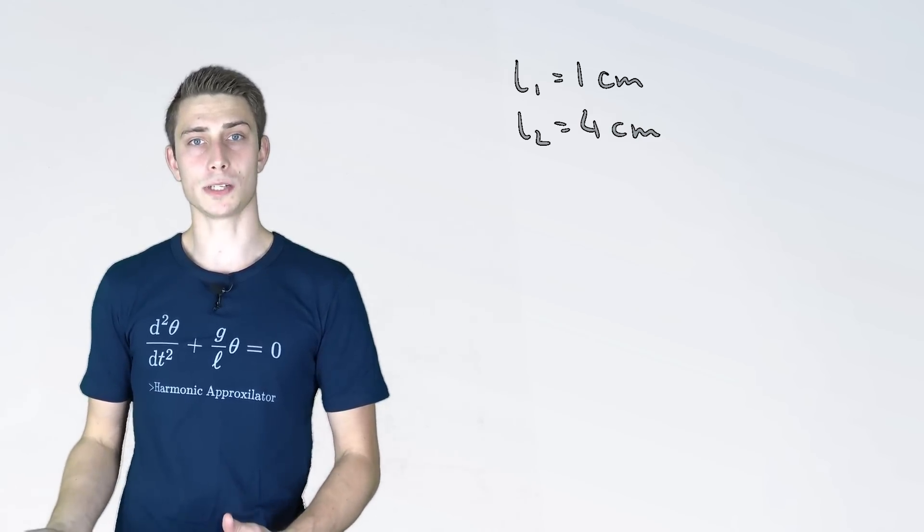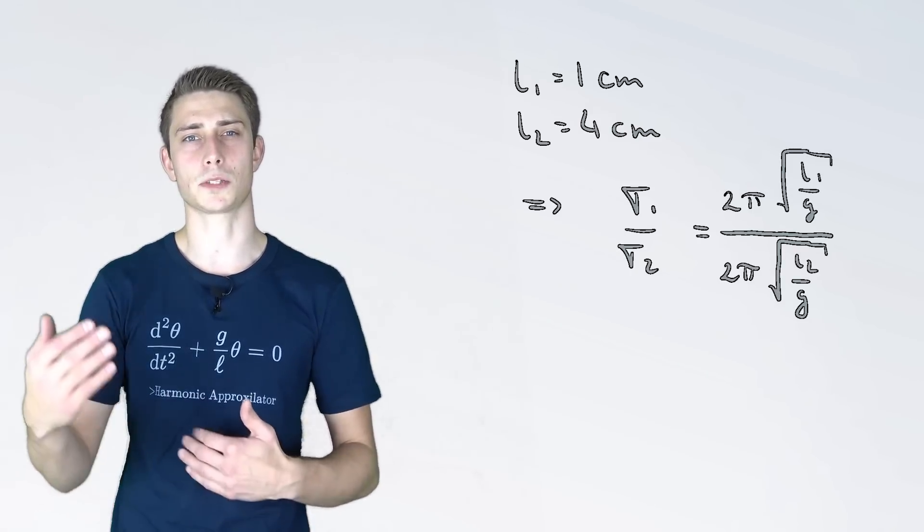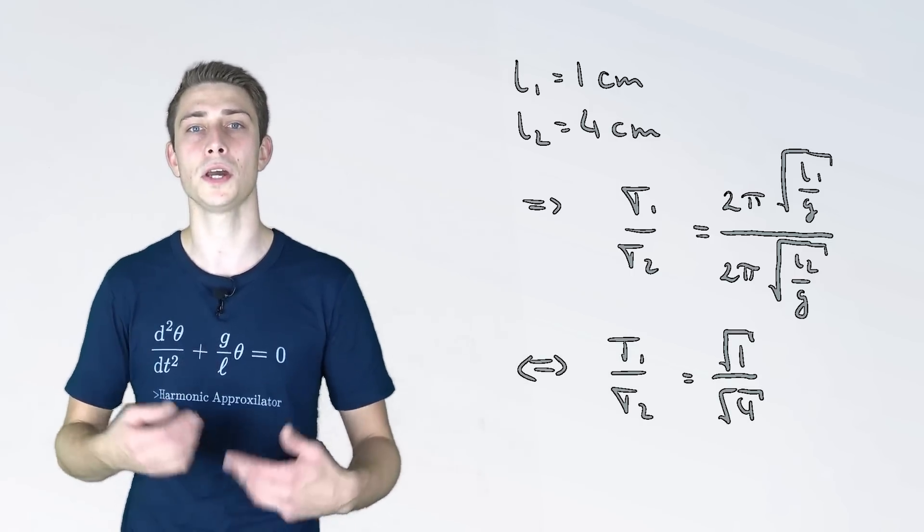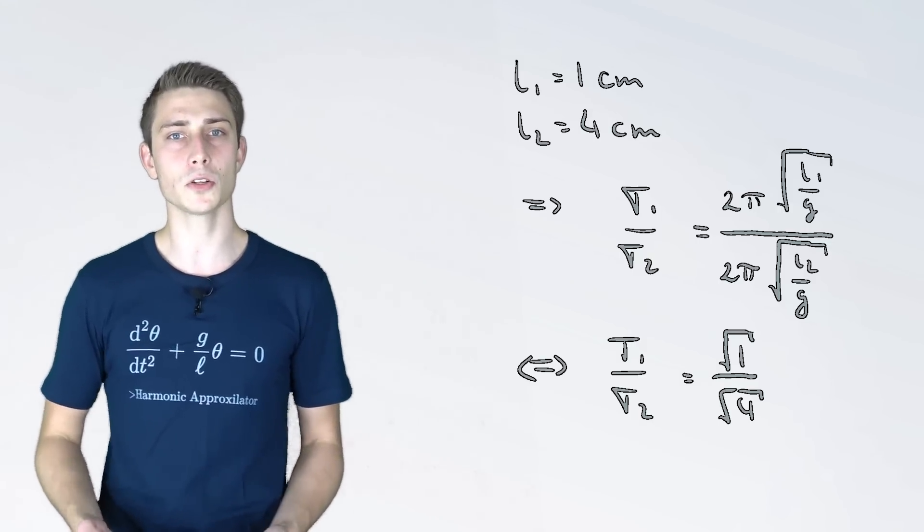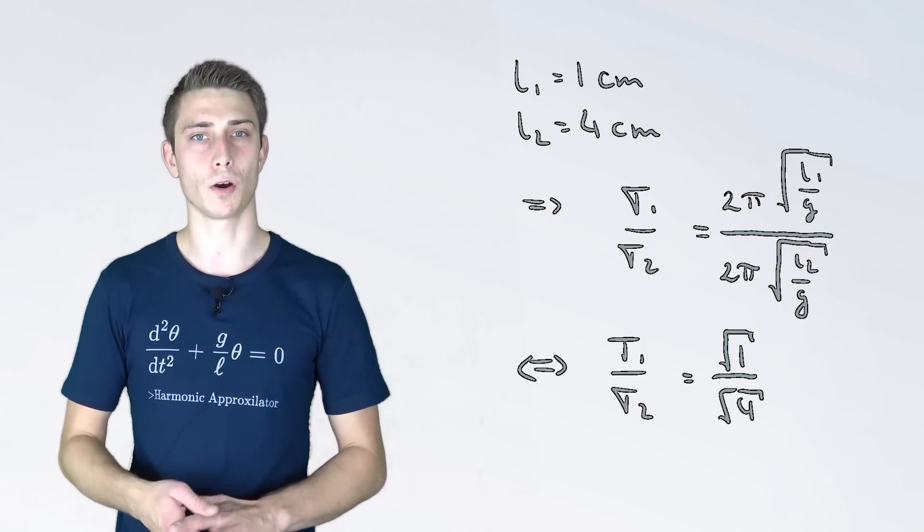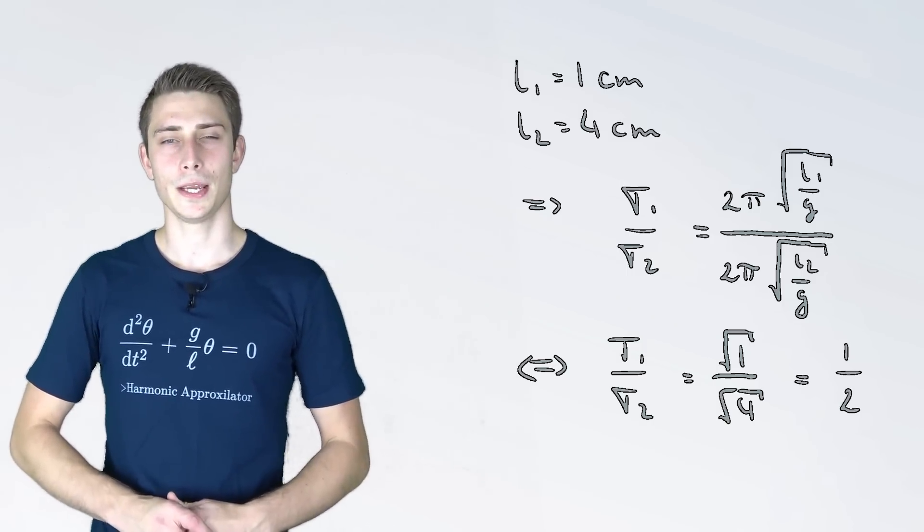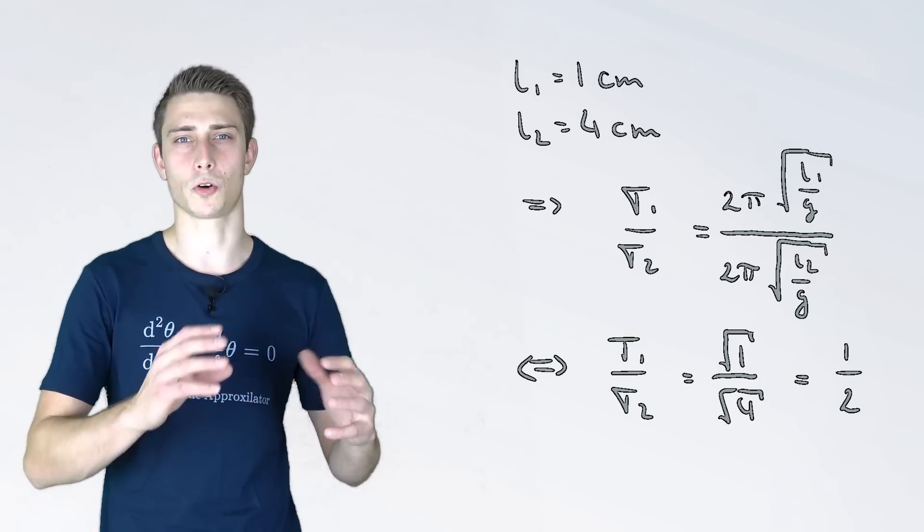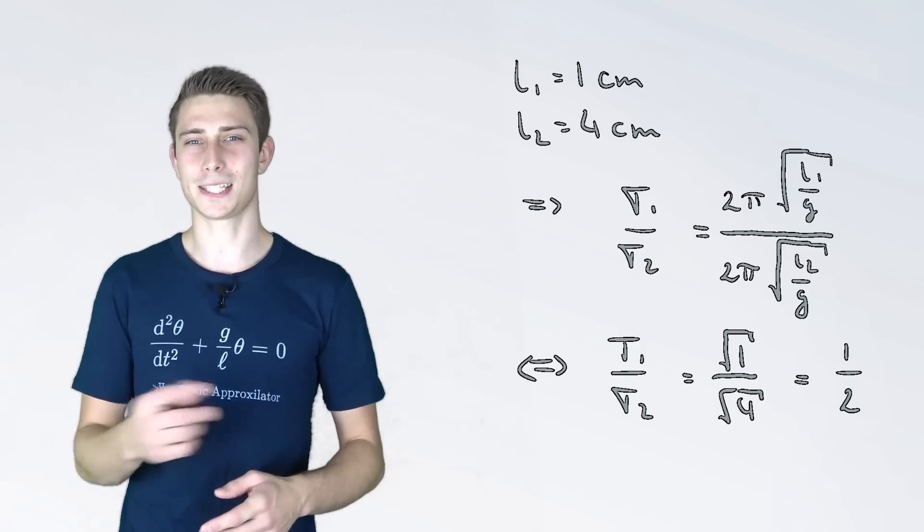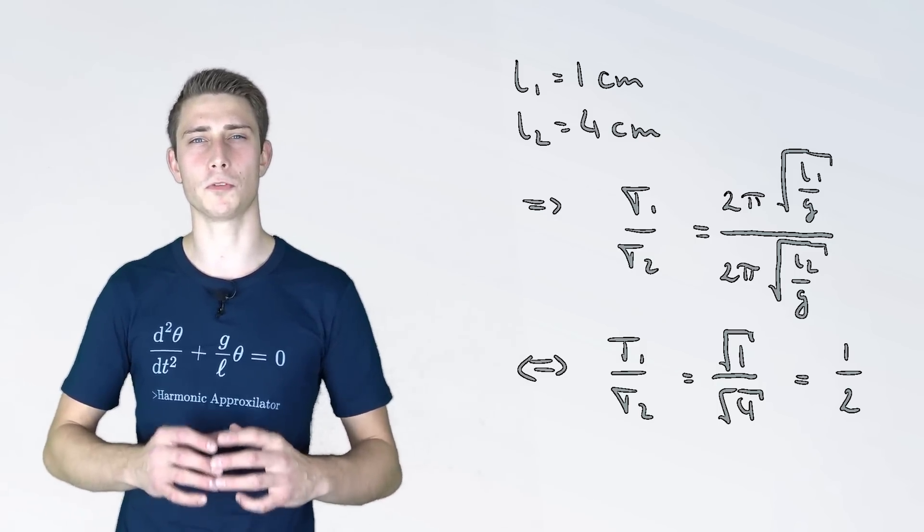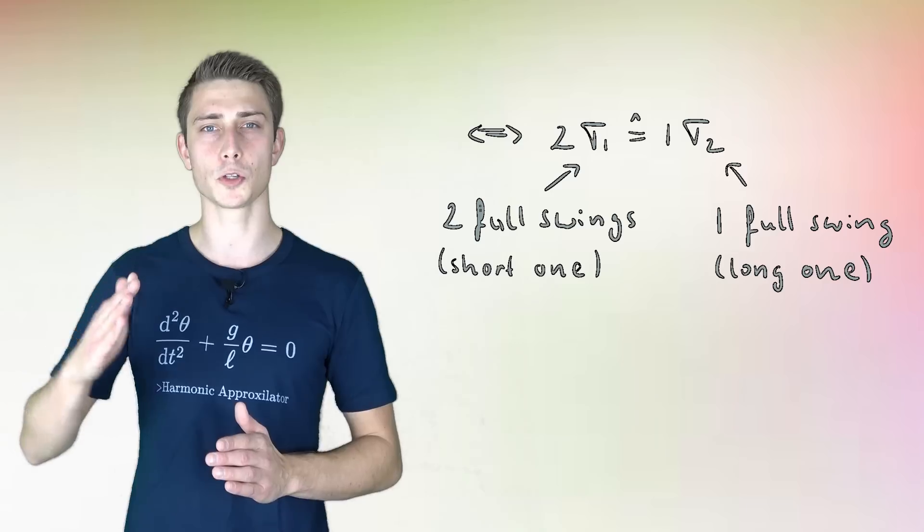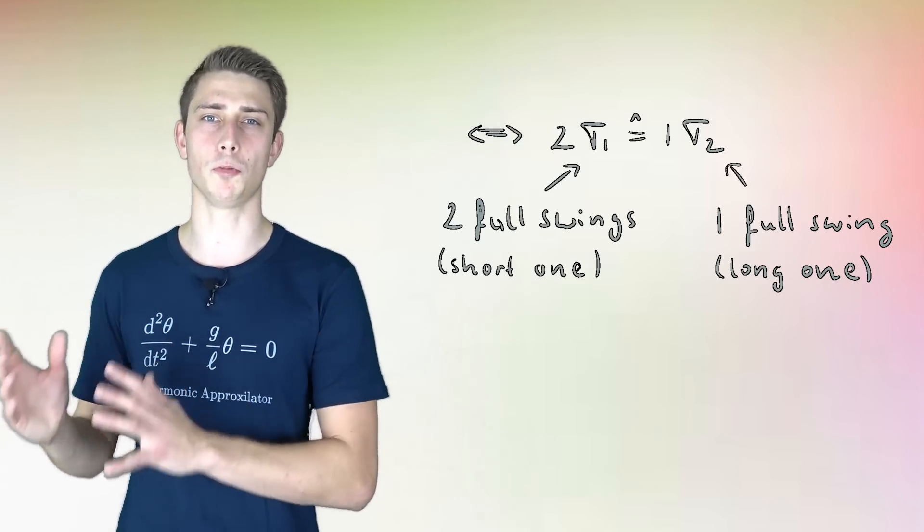Now one thing you could think about is that the longer pendulum is going to have a longer period time. So it has to swing less than a shorter one to get back to the initial phase phi naught. Now we are going to consider ourselves the ratio of those two period times t1 over t2 and you are quickly going to notice that the two pi terms are constant are going to cancel out. Square root of g is going to cancel out and we are going to end up with square root of one over square root of four. Which is going to simplify to one half. And now here's the final result which is really important for what we are going to talk about next.